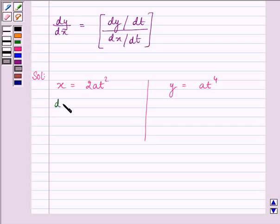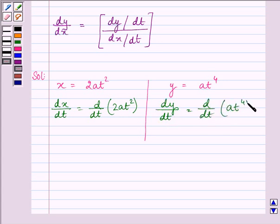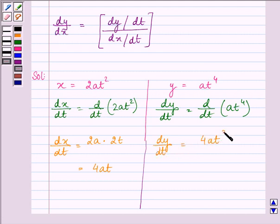First, we'll find dx/dt, the derivative of 2at² with respect to t. We'll also find dy/dt, the derivative of at⁴ with respect to t. We have dx/dt = 4at, whereas dy/dt = 4at³.